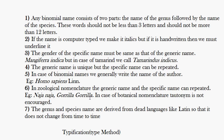For example, Naja naja and Gorilla gorilla — the generic name and specific name are repeated. This is called a tautonym. In botanical nomenclature, however, tautonyms are not encouraged.